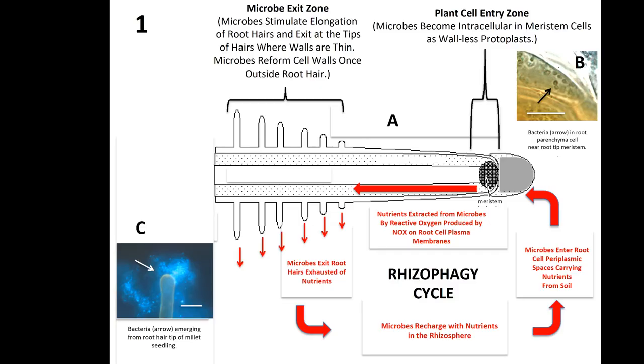This is a root hair, and you can see a light area coming out — those are bacteria being ejected from that hair.